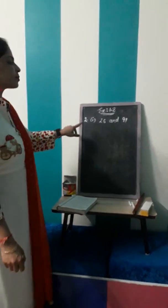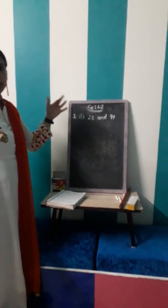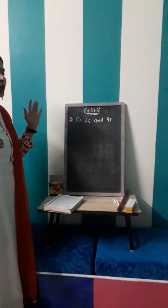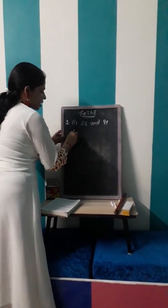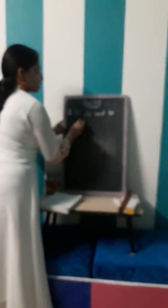So we will begin with the first sum that is 26 multiplied by 91. So what we have to do? We have to do the prime factorization of both the numbers separately firstly.